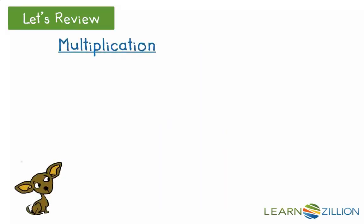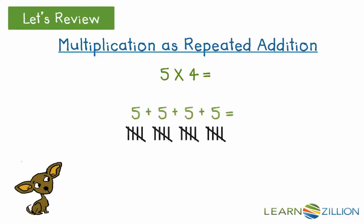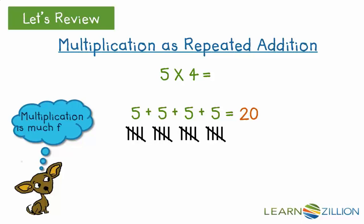Let's also review multiplication as repeated addition. 5 times 4 can be solved by adding 5 four times: 5, 10, 15, 20. Repeated addition works to solve the answer. However, multiplication is much faster. 5 times 4 equals 20.